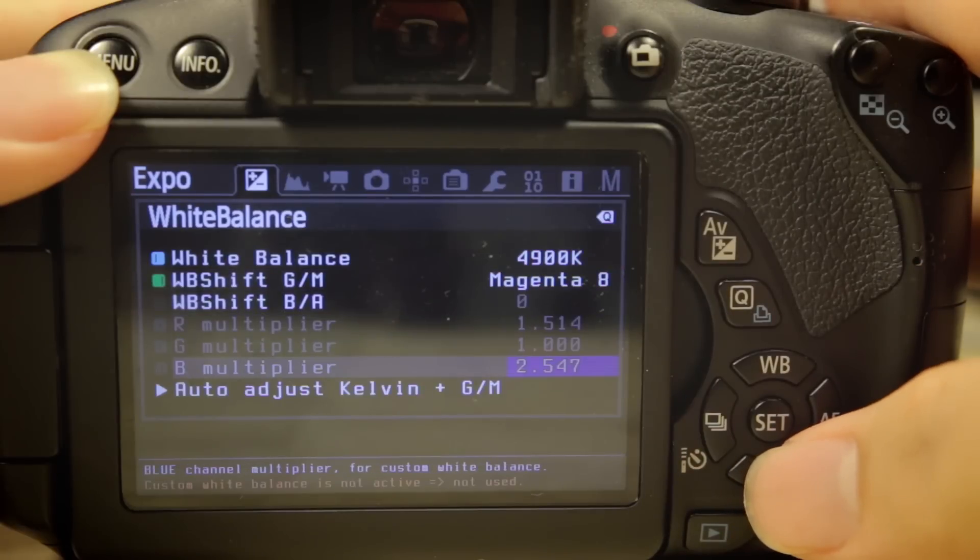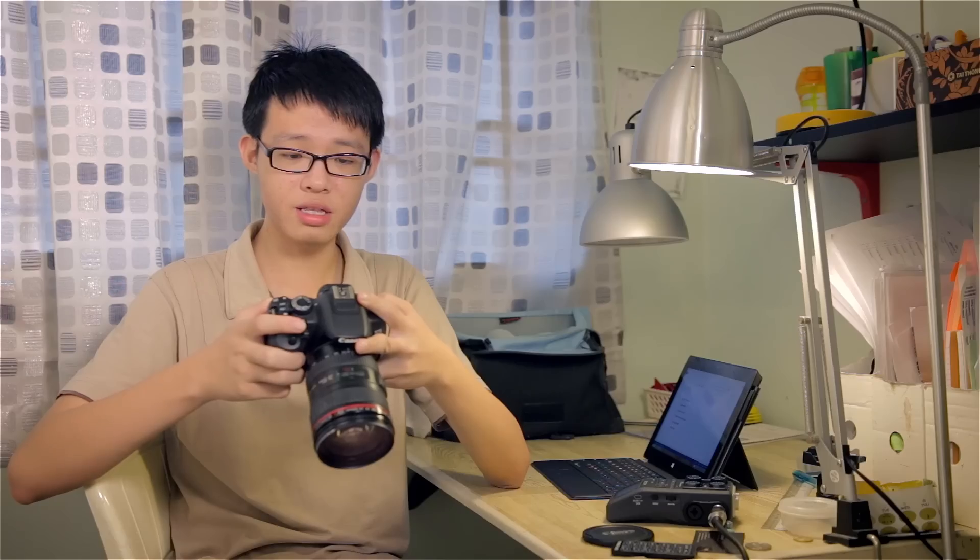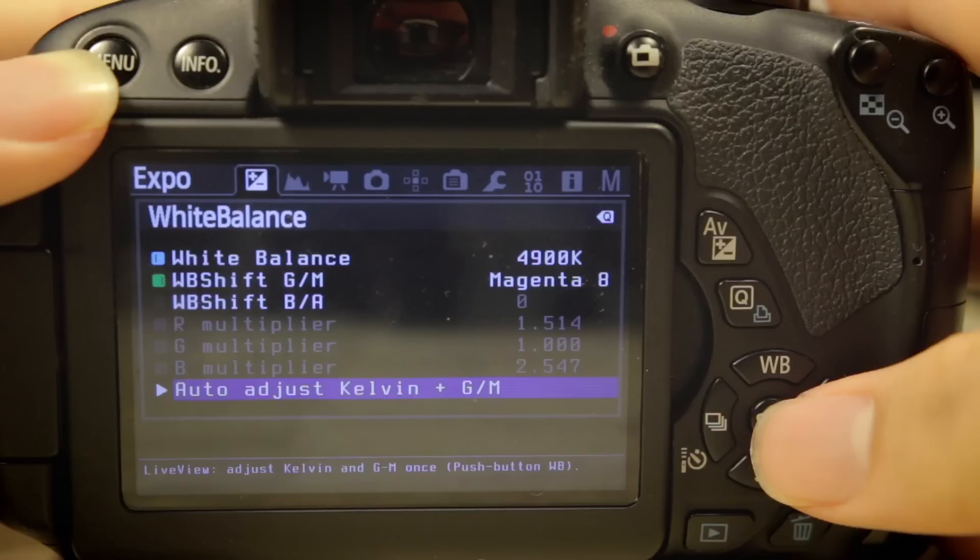So with Magic Lantern, you don't need to do all that crazy stuff again. It's very tedious. With Magic Lantern, all you have to do is go to the White Balance setting and then you can set the Custom White Balance, the auto-adjust Kelvin plus G slash M, whatever G slash M is.